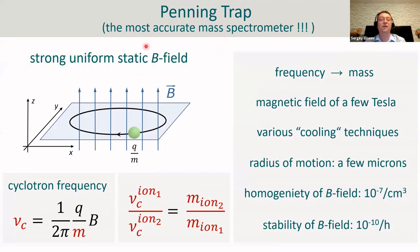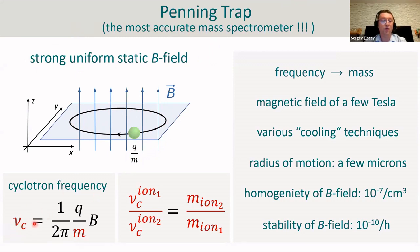The basic idea underlying Penning trap mass spectrometry is trapping an ion with charge Q and mass M in a strong homogeneous magnetic field. In such a field, the ion performs circular motion in the radial plane perpendicular to the magnetic field lines — we call this the free cyclotron motion. Its frequency is inversely proportional to the ion's mass, and proportional to the ion's charge and the magnetic field strength. By measuring the ratio of cyclotron frequencies of two ions, one can directly determine the ratio of their masses. One is almost always interested in mass ratios or mass differences, not absolute masses.